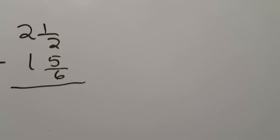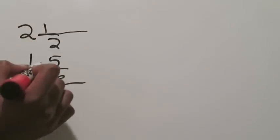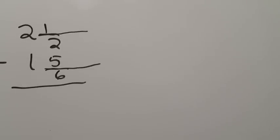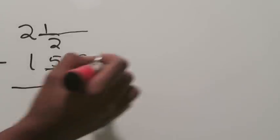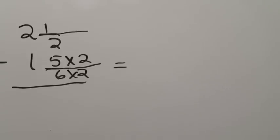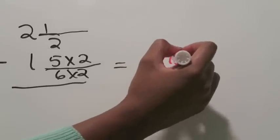I'm going to erase this just to have some room — I don't know why I erased the whole problem, but we'll rewrite it. So it's two and a half, we're subtracting one and five sixths, and my common denominator is going to be 12. I'm going to extend the fraction bars because I know I'll be using multiplication. I need to multiply six times two to get 12, and whatever is done to the denominator must be done to the numerator — so one and five sixths becomes one and ten twelfths.